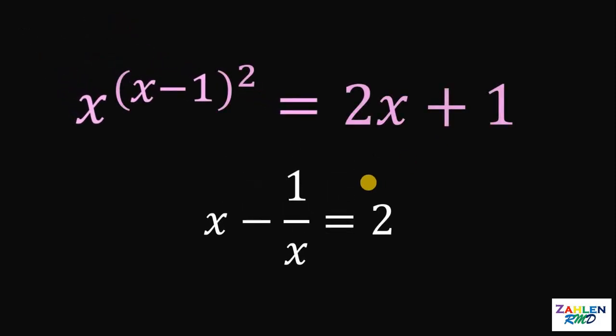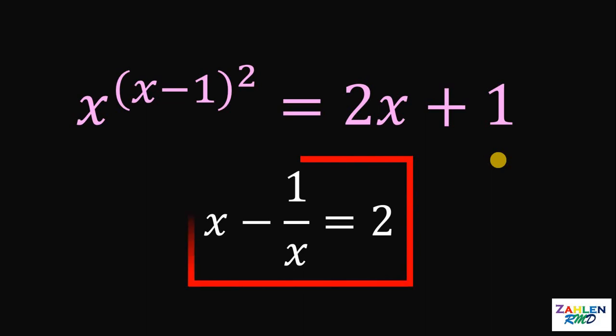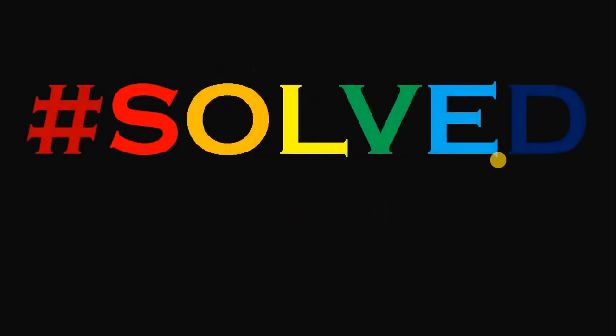Therefore, the value of x minus 1 over x given that x raised to x minus 1 quantity squared equals 2x plus 1 must be 2. And as always, we are done. So, thank you.